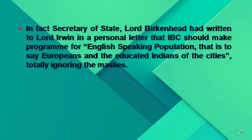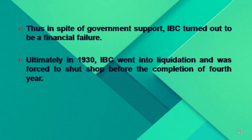By 1930, IBC had opened only two small transmitters and issued less than 8,000 licenses. Programs were mostly in English, so all strata of people could not understand what was being broadcast. The Secretary of State had written to the Viceroy that IBC should make programs for the English-speaking population — the Europeans and educated Indians of the cities — totally ignoring the masses. Thus, in spite of government support, IBC turned out to be a financial failure, and in 1930 went into liquidation before completing its fourth year.